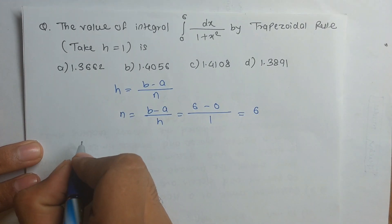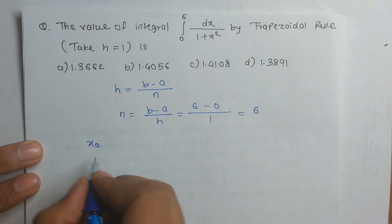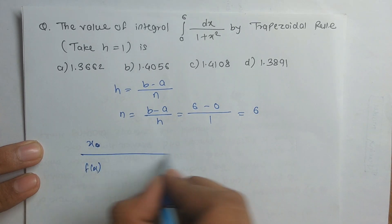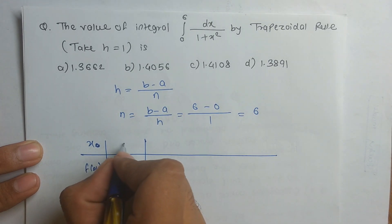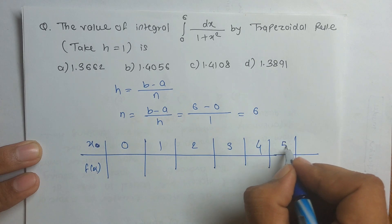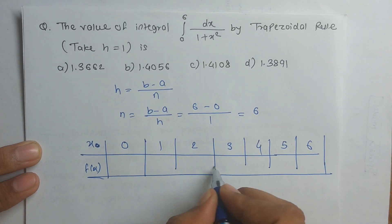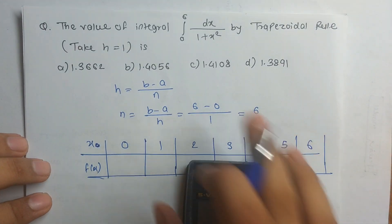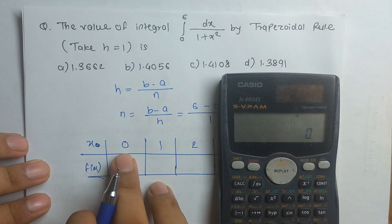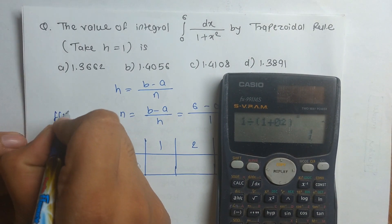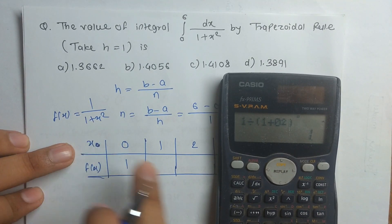We create a table with x values from 0 to 6: x = 0, 1, 2, 3, 4, 5, 6. We then find the corresponding f(x) values where f(x) = 1/(1 + x²). For x = 0: f(0) = 1/(1 + 0) = 1. For x = 1: f(1) = 1/(1 + 1) = 0.5.